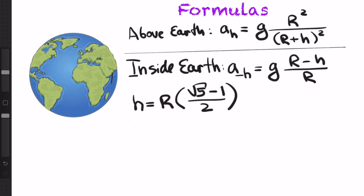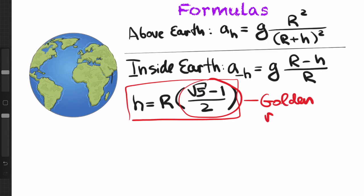So once again, here is our result. And this number in the brackets is golden ratio. This is a big surprise. It turns out that gravity and golden ratio are connected.